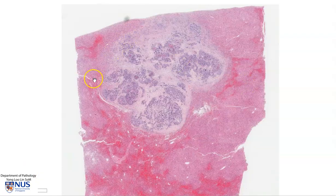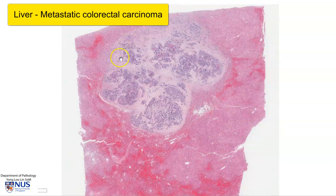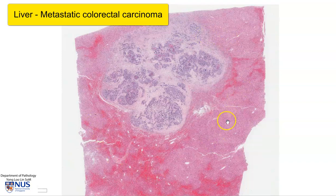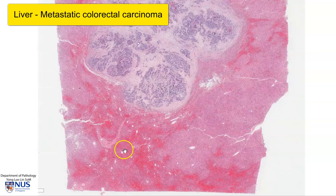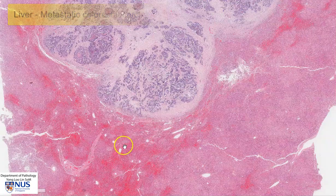Hello, this is a virtual microscopy slide of metastatic colonic carcinoma in the liver. Here is the metastatic deposit, and this is the non-neoplastic liver. In this bottom left area, we can see some areas of hemorrhage.